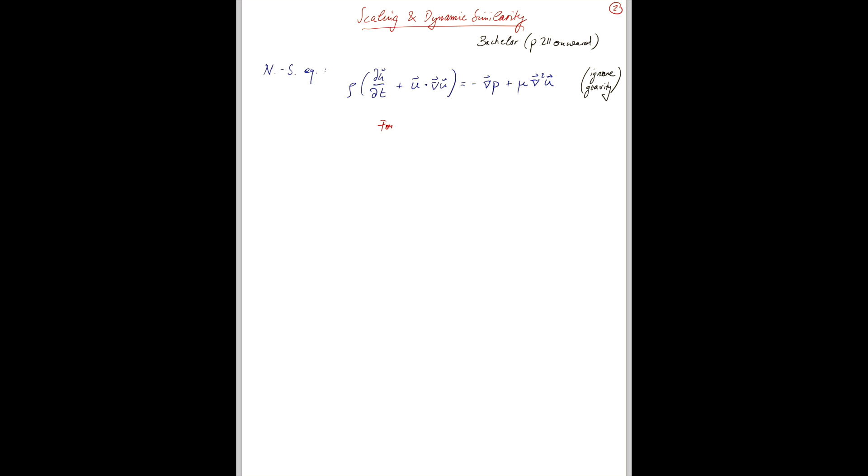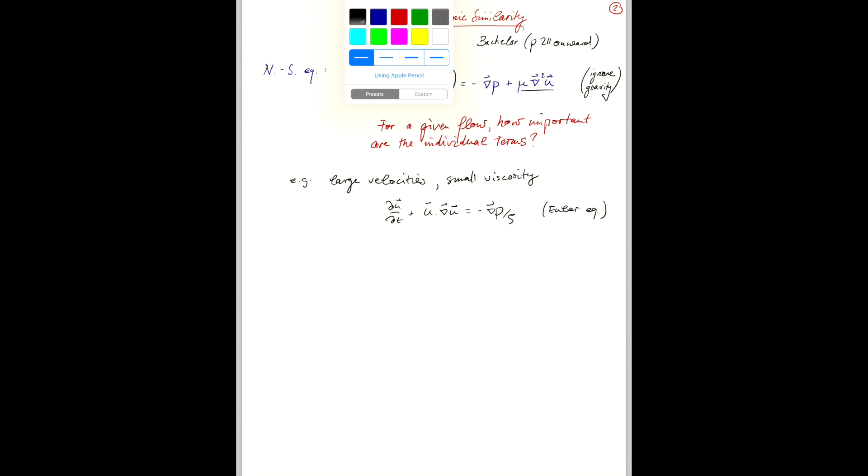So, the question that we are going to address in this section is, for a given flow, how important are the individual terms? So, we could say, roughly, if we have, for example, large velocities and a small viscosity, then the viscous term, the last term here, becomes negligible. And we can write this simply as du dt equals minus grad P over rho, which is nothing else but the Euler equation.